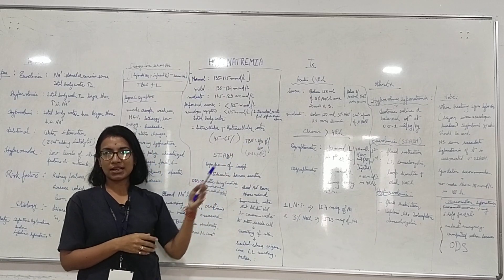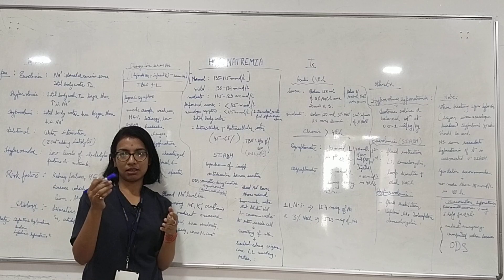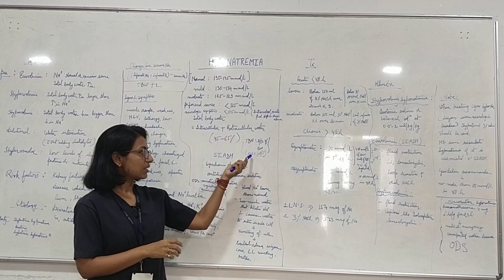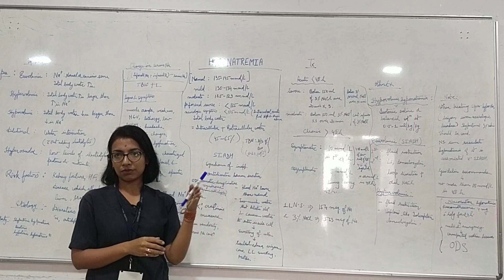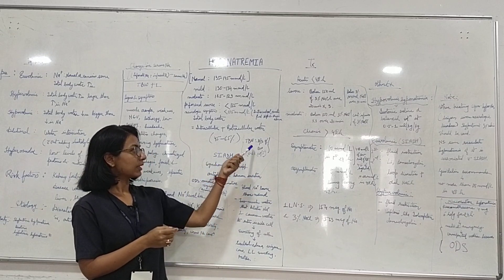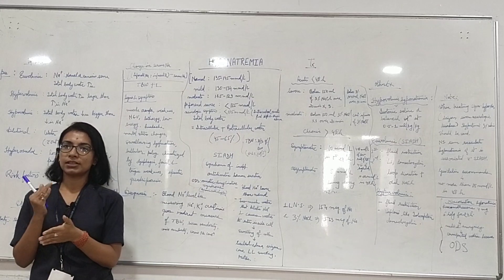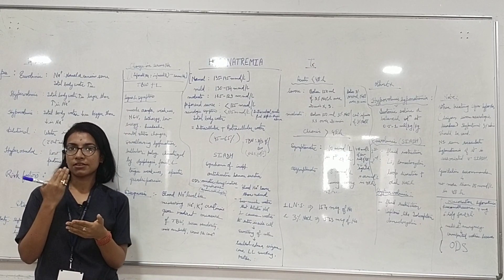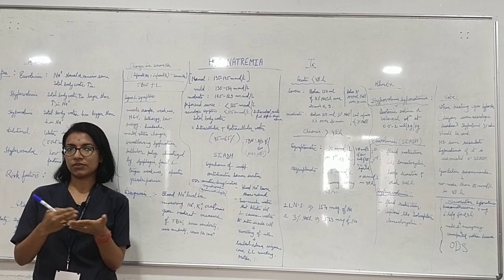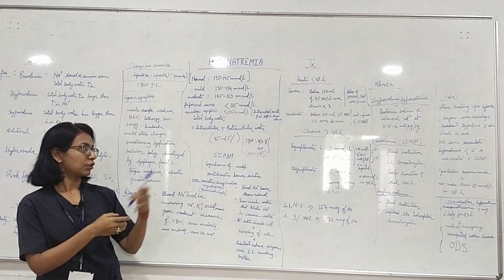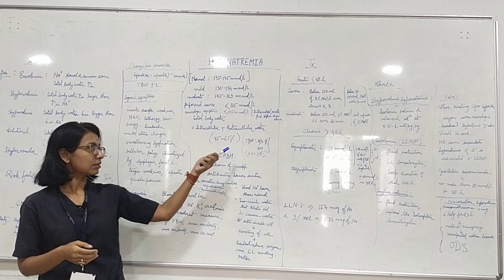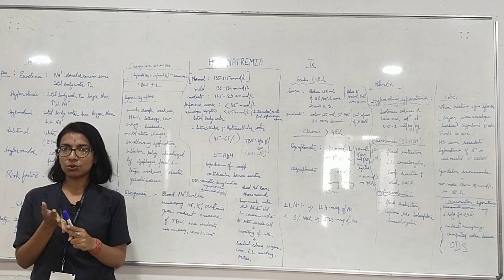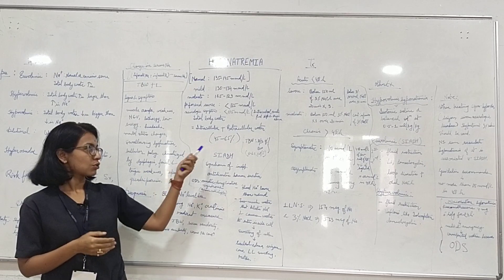Total body water contributes almost 45 to 65 percent of the body weight of an adult. There are many formulas to calculate it, but one simple formula is 0.6 multiplied by the body weight of the individual. It also depends on your diet and physical activity — fitness-focused individuals who take lots of proteins and other nutrients will have different values.